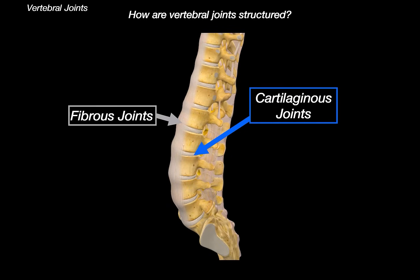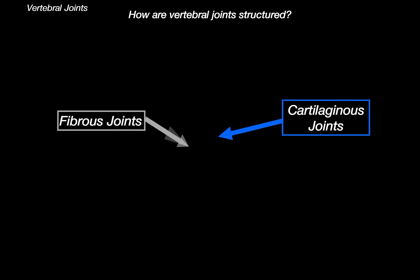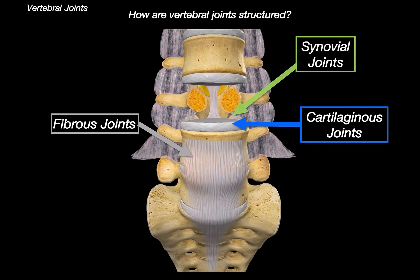We also have cartilaginous joints, where bones are united by cartilage, allowing more flexibility than fibrous joints but still providing a lot of stability. From the lower perspective, we can also see synovial joints, characterized by a joint cavity filled with synovial fluid surrounded by a capsule, allowing more movement. And we have bony joints, where two bones are fused together into a single bone over time.